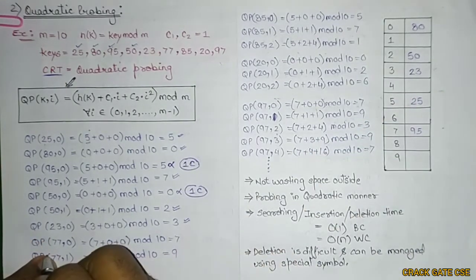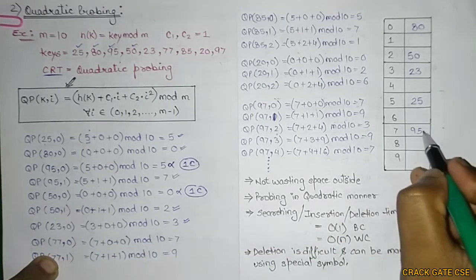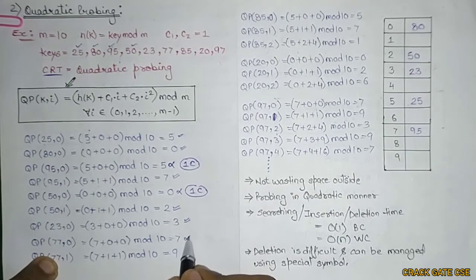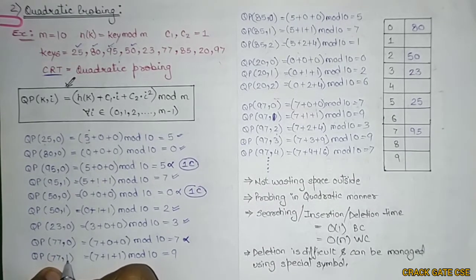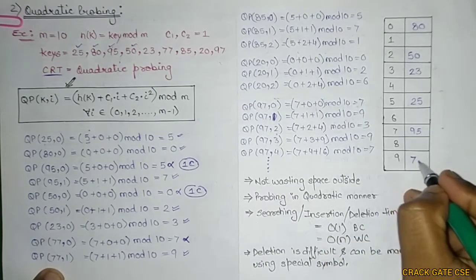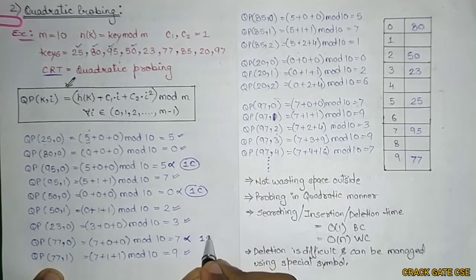For key=77, i=0: 77 mod 10 = 7, but slot 7 already has 95. We increment i to 1 and compute H(77,1) = 9, which is empty, so 77 is stored at slot 9. That is 1 collision for key 77.